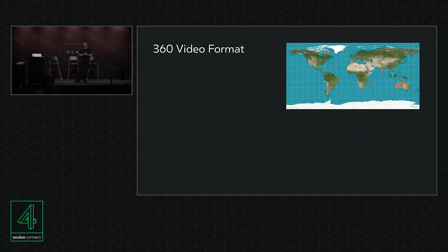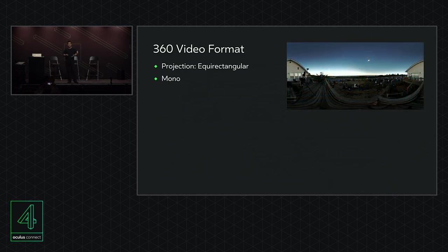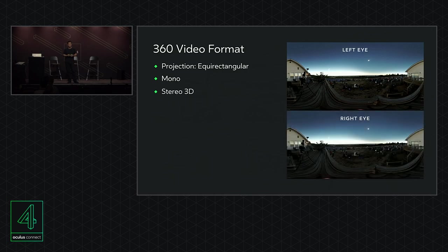Let's talk about the 360 video format. 360 videos are typically shared in equirectangular projection. If you're not familiar with this projection, it's one of the typical projections you see used in maps around the world — it basically allows you to represent a sphere using a plane. In mono content, this is just a single video stream. This is a screen grab from a video of the recent total solar eclipse in Oregon, shown as equirectangular projection as standard video.